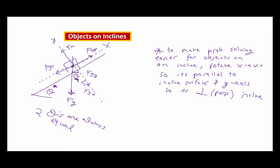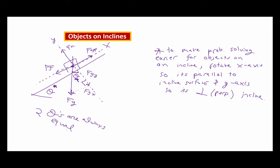Let's do some problems using this idea of objects on inclines. Example number 18: a 1200 kg Scion XB on a 20 degree frictionless incline — we're just going to let it roll down and see what happens. I'll draw a little picture. I ask: what's currently physically pushing or pulling the car? For an incline problem on the quiz, you'll see a dot with a dotted line corresponding to the incline surface — that dotted line is your x-axis.